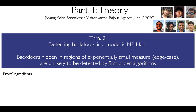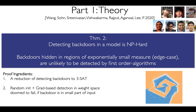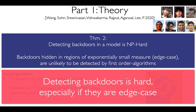The second theoretical result we establish is that not only is defending against backdoors hard, as it implies defenses against adversarial examples, but it is also hard to detect the presence of backdoors. We show that detecting a backdoor is equivalent to solving 3SAT, which is an NP-hard problem, and that backdoors carefully crafted to occupy an exponentially small fraction of the input space are unlikely to be detectable in polynomial time by gradient-based algorithms. This idea of an attack that affects a small fraction of the input distribution motivated us to come up with practical training time backdoor attacks that we call edge case.